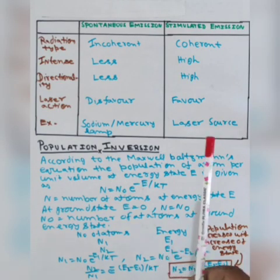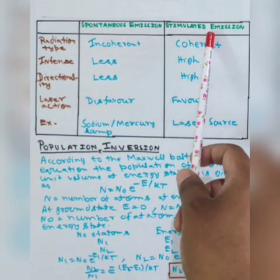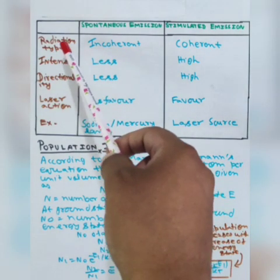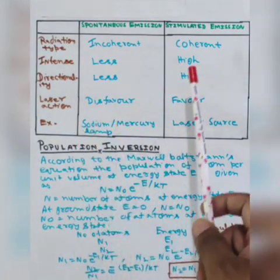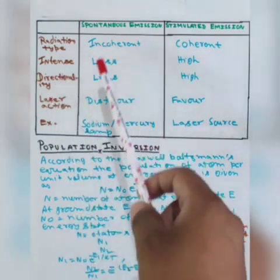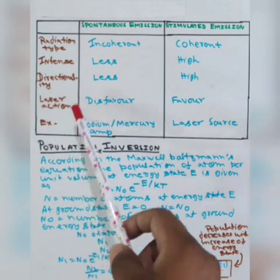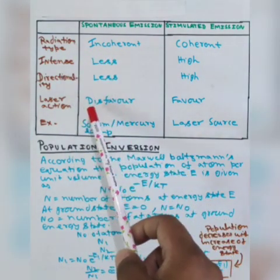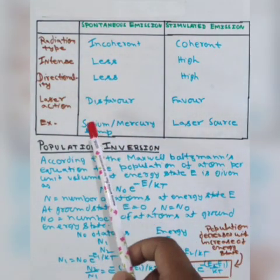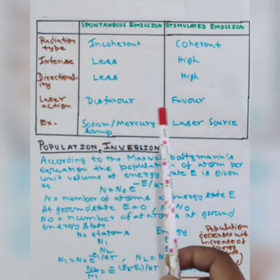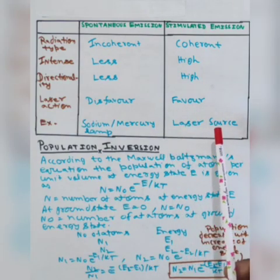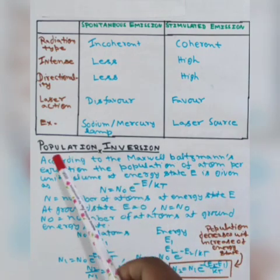In this slide, we will discuss the difference between spontaneous and stimulated emission, and also population inversion. The radiation type is incoherent in the case of spontaneous emission, and coherent in the case of stimulated emission. The intensity is very less for spontaneous emission and very high for stimulated emission. Directionality is less for spontaneous and high for stimulated. For laser action, spontaneous emission is disfavored and stimulated emission is favored. An example of spontaneous emission is the sodium or mercury lamp — ordinary light sources. In the case of stimulated emission, the example is the laser source.